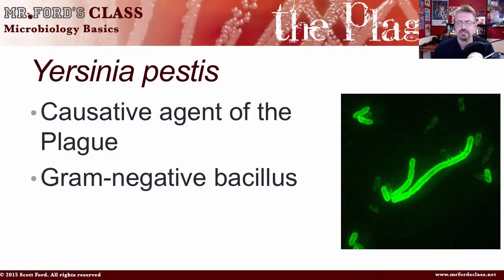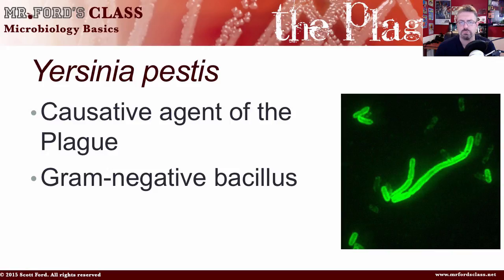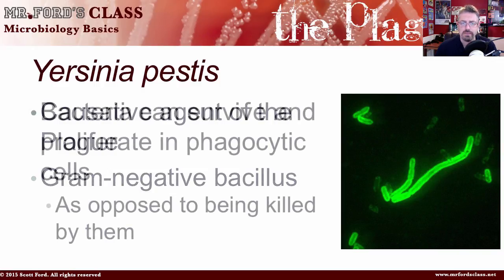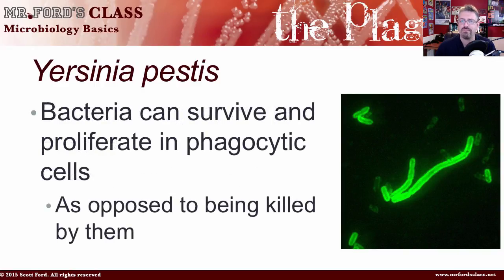Yersinia pestis is the causative agent of the plague. It is considered a gram-negative bacillus — a gram-negative bacteria. The bacteria can survive and proliferate in phagocytic cells.